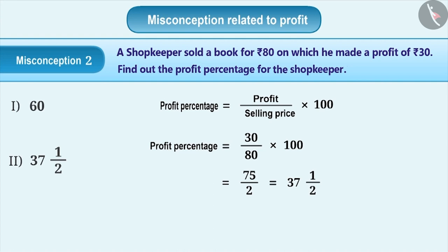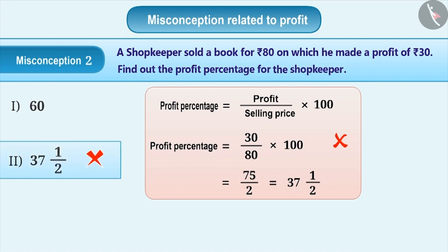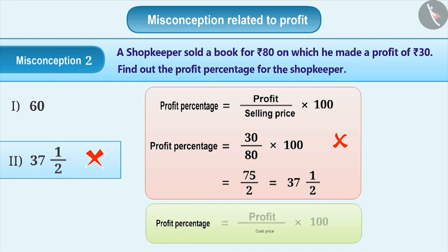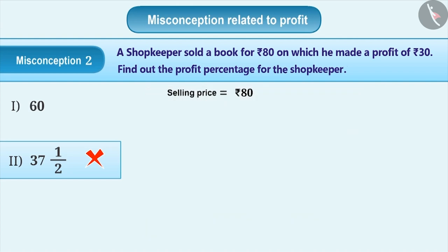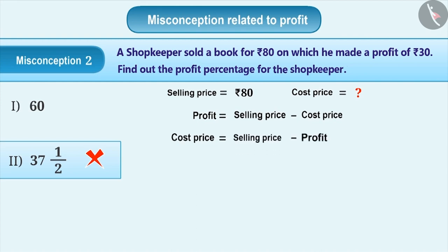But profit percent or loss percent is never calculated on selling price. The correct understanding is that profit percent or loss percent is always calculated on cost price. Therefore, profit percent is equal to profit by cost price into 100. We know the selling price, but we don't know the cost price. So let's find out the cost price. Since profit is equal to selling price minus cost price, cost price is equal to selling price minus profit, which is equal to Rs. 80 minus Rs. 30, which is equal to Rs. 50.